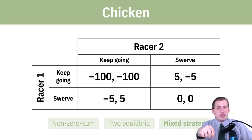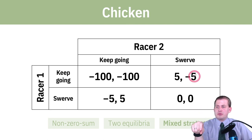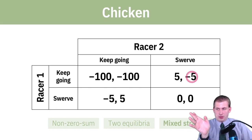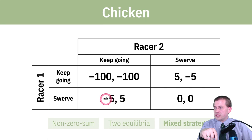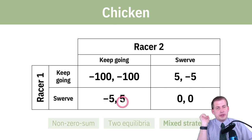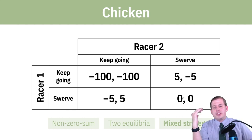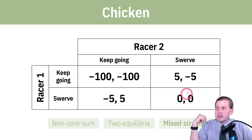You get benefit if one of you swerves and the other doesn't. If racer one decides to keep going, they get five points of happiness because racer two has to move off to the side — racer two blinked first and gets negative points. Same thing in reverse: if racer two keeps going but racer one swerves, racer one gets negative five points while racer two gets the benefit. If they both swerve at the same time, they end up with no points and just skulk away.